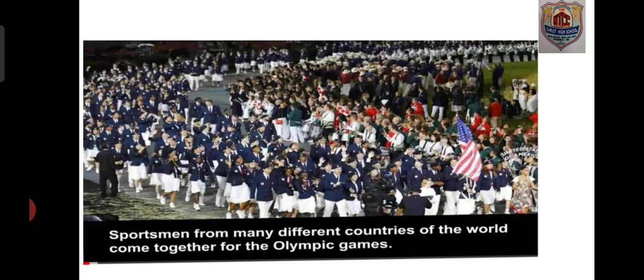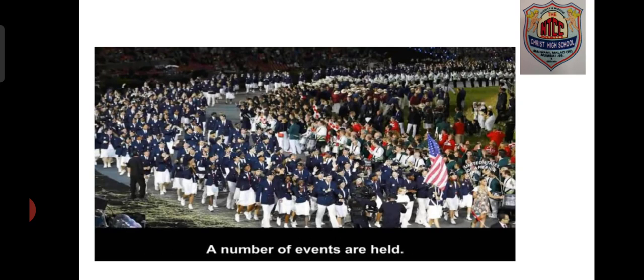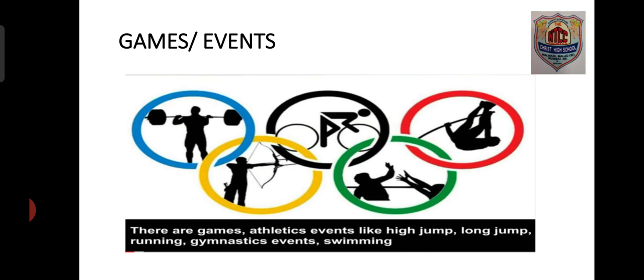Sportsmen from many different countries of the world come together for the Olympic Games. It is a very big event, and a number of events are held — not just one or two, but many, many events. People wait to watch the Olympic Games. The athletic events held include high jump, long jump, running, gymnastics, swimming, and so on. In each circle of the Olympic symbol, we can see different sports.